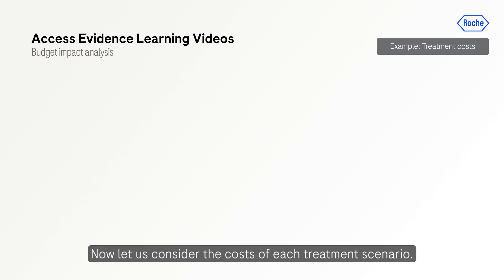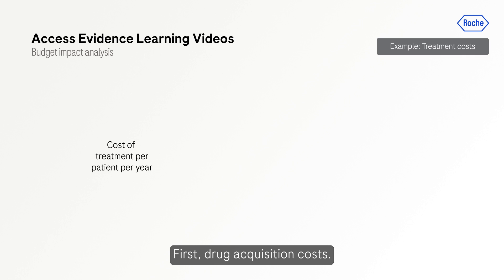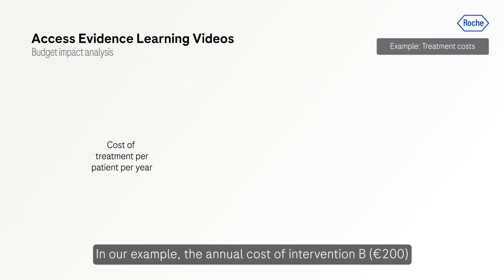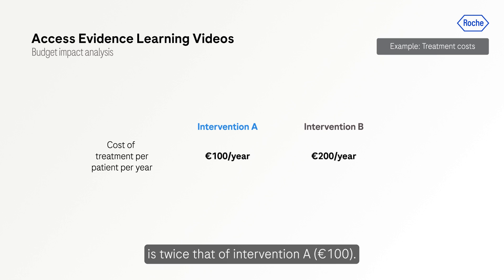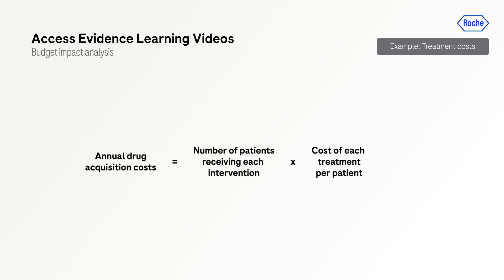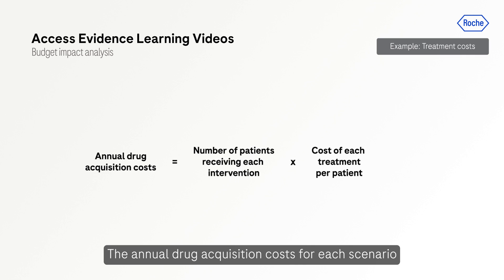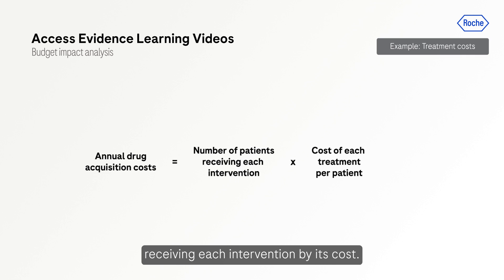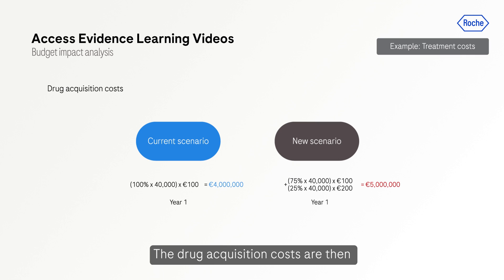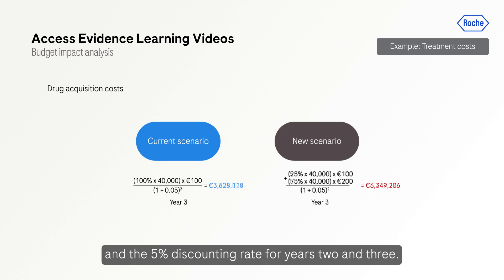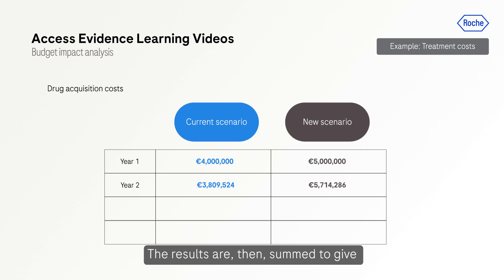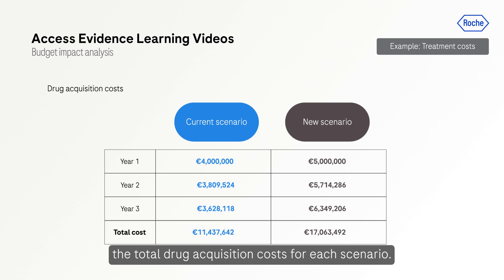Now let's consider the costs of each treatment scenario. First, drug acquisition costs. In our example, the annual cost of Intervention B — 200 euros — is twice that of Intervention A at 100 euros. The annual drug acquisition costs for each scenario are calculated by multiplying the number of patients receiving each intervention by its cost. The drug acquisition costs are then calculated for each of the three years, taking into account the different treatment mixes and the 5% discounting rate for years 2 and 3. The results are then summed to give the total drug acquisition costs for each scenario.